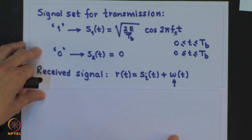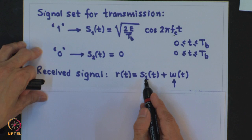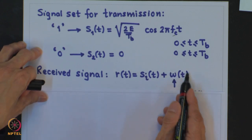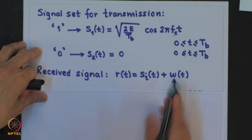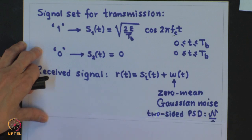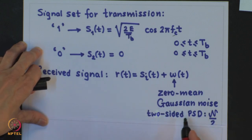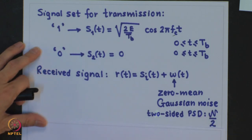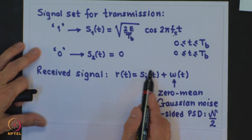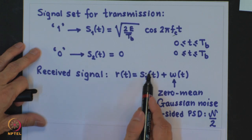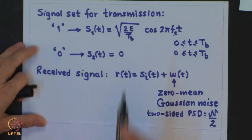The received signal would be equal to S_i(T) plus W(T), where W(T) is additive white Gaussian noise of zero mean, and the two-sided power spectral density is given by N/2 watts per hertz. Depending on which symbol we have transmitted, S_i(T) will take one of these forms.